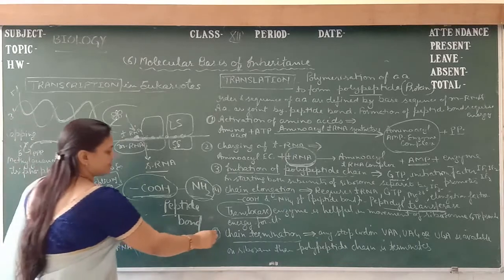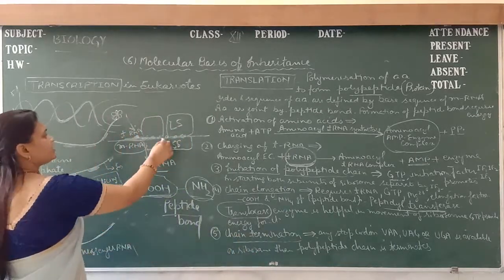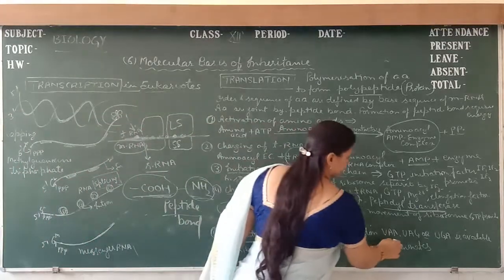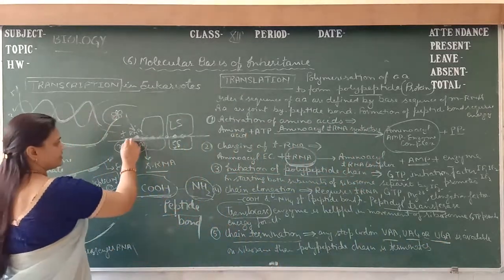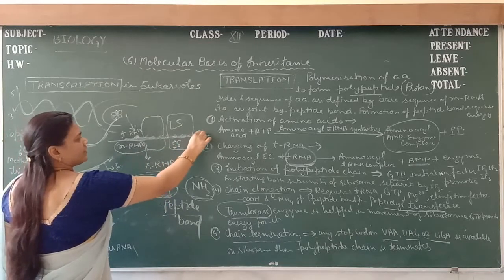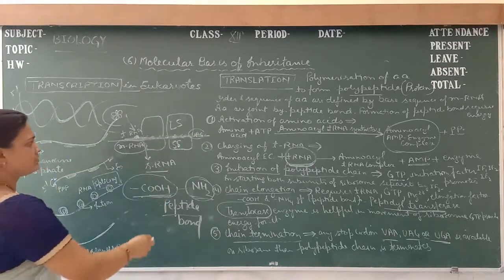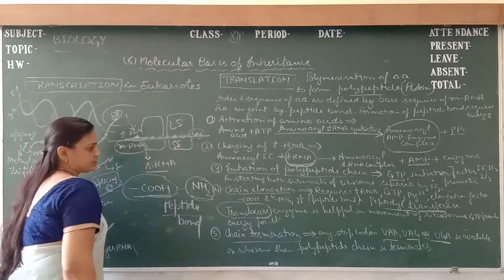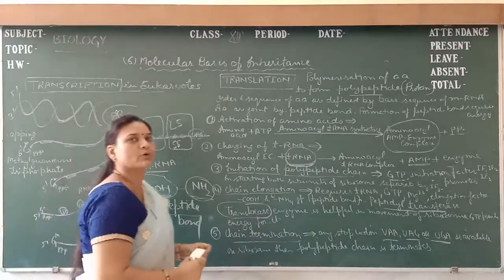The last step is chain termination. When any one of the stop codons — UAA, UAG, or UGA — is present in the sequence of messenger RNA, the polypeptide formation is stopped and protein synthesis is complete. This is all about protein synthesis. Thank you.